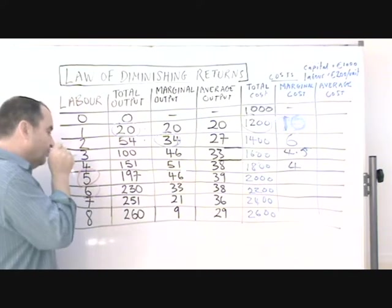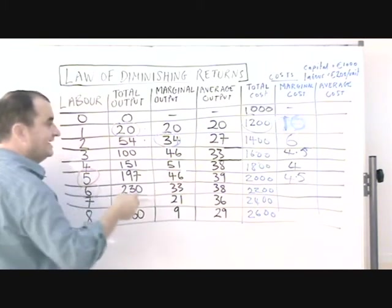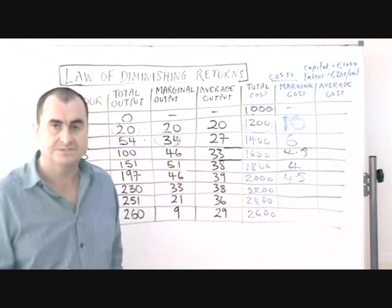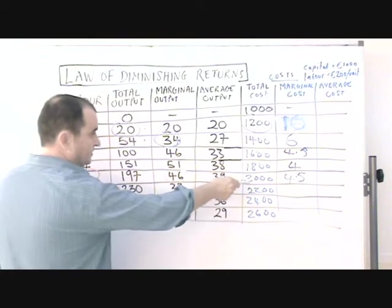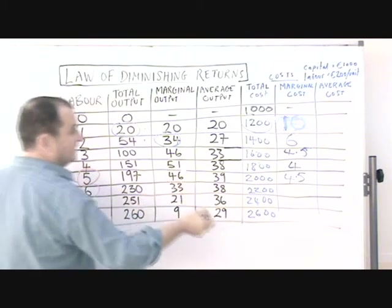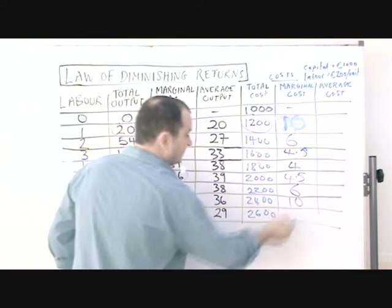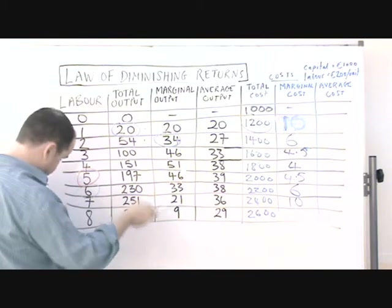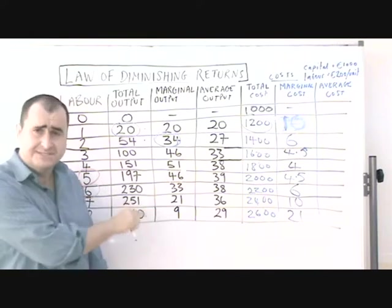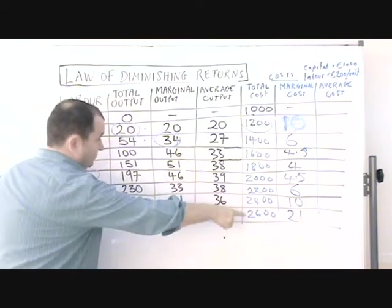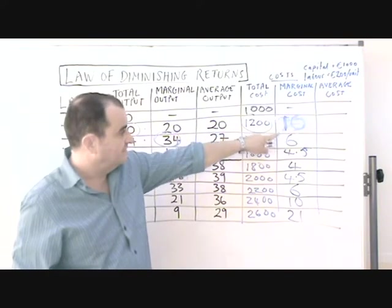But when diminishing marginal returns occurs, we see a rising marginal cost. The extra 200 of cost didn't produce as many extra units of output, so each of those units of output must have cost more per unit. The next 200 of costs only produced an extra 33 units — roughly 6. The next 200 only produced about 20 to 21 units — roughly 10. And the next 200 of cost only produced 9 extra units, at something like 21 Euros each. Those 9 units were very expensive to produce per unit — an extra 200 of cost only gave us 9 extra units.